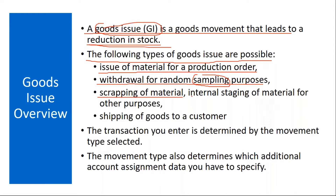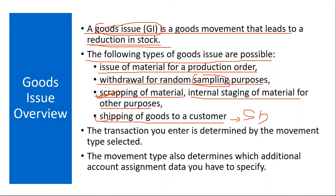Other types include scrapping of material and internal staging of material for other purposes. Scrapping means, for example, you have a material that has expired and you are not going to use it anymore, so you scrap it — that also comes under goods issue. Another type is shipping of goods to a customer, which is done in the SD — sales and distribution — module, where they deliver the product to the customer. This is executed exclusively in the SD module.